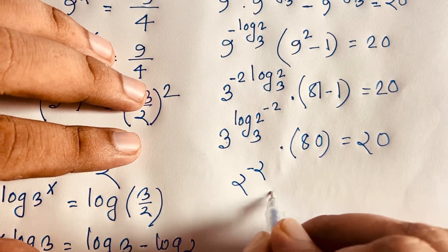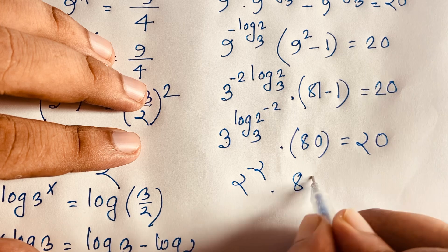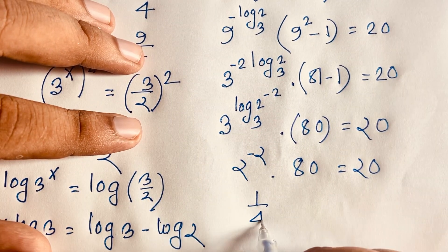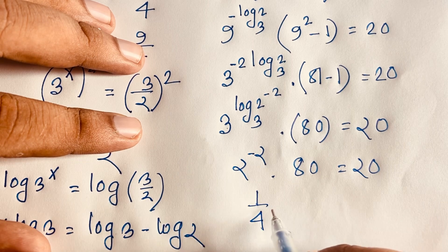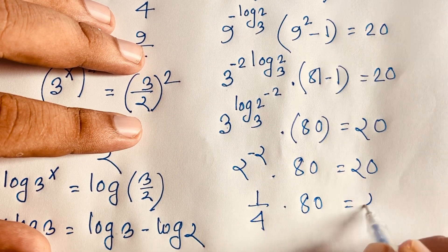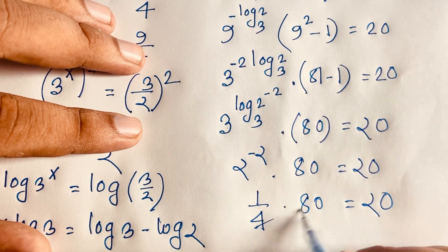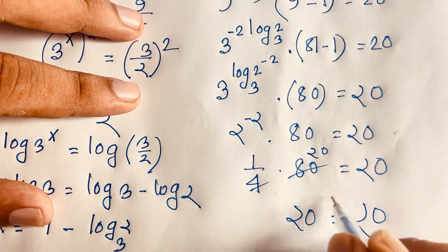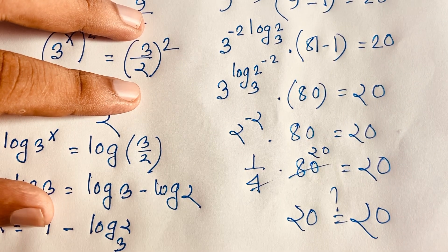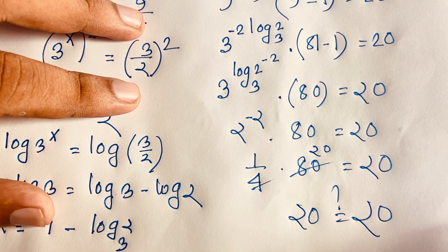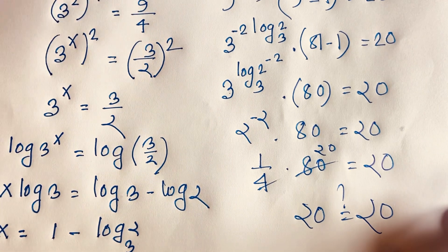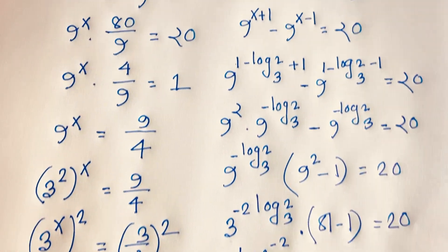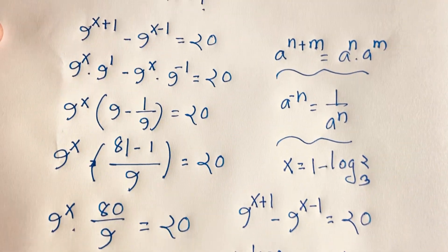Now 2 to the power minus 2 is 1 over 4, so 1 over 4 times 80 equals 20. And 80 divided by 4 is indeed 20. So 20 equals 20 — verified! Therefore x equals 1 minus log base 3 of 2 is our final answer for this exponential equation. Thank you all; if you enjoyed this video please subscribe for more interesting videos. Goodbye, take care.